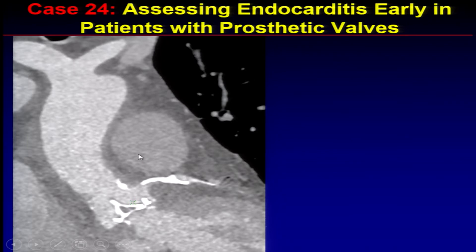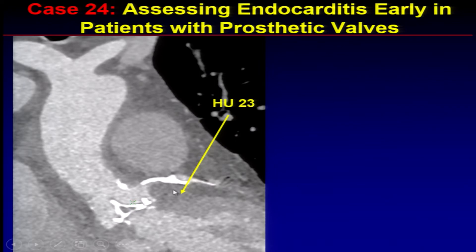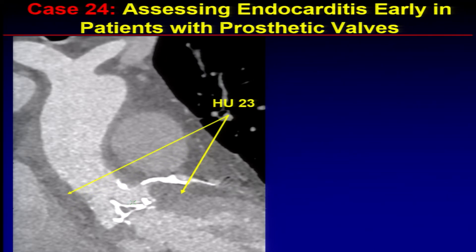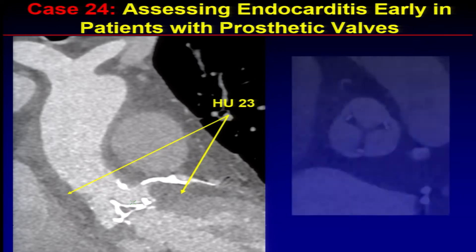We're finding that by using CT, we can identify who these patients are going to be much earlier, before they develop pseudoaneurysm. This patient was post-operative several months and came back with fever and positive blood cultures. When we did a CT, normally around the annulus and root you get negative Hounsfield numbers — a lot of fat. This patient had HU of 23, consistent with some kind of fluid collection, going all the way around the ascending aorta.